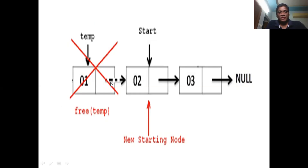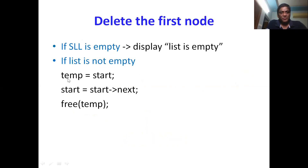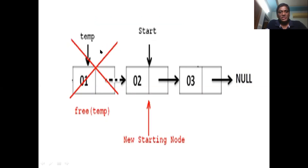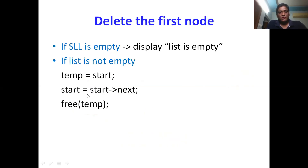I want to delete the first node from the list. Initially start will be pointing to the first node. What I will do is take a temporary variable temp which points to the start node — temp equals start. So temp points to the node where start is pointing. Then we move start from here to the next node: start equals start->next.